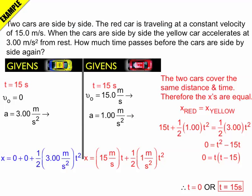So x is equal to 0 plus 0 plus 1/2 times 3 meters per second squared times t squared. I'll rewrite the equation and the time, well, that's just one more given that I just calculated. So there's my 15 seconds.